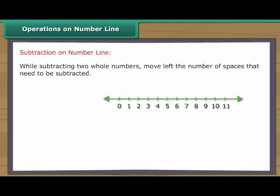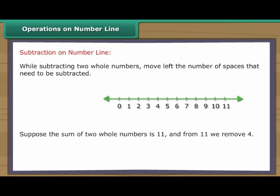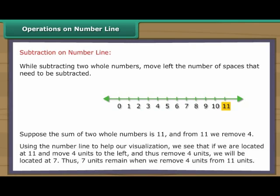While subtracting two whole numbers, move left the number of spaces that need to be subtracted. Suppose the sum of two whole numbers is 11 and from 11 we remove four. Using the number line to help our visualization, we see that if we are located at 11 and move four units to the left and thus remove four units, we will be located at seven. Thus, seven units remain when we remove four units from 11 units.